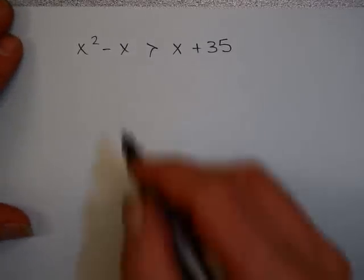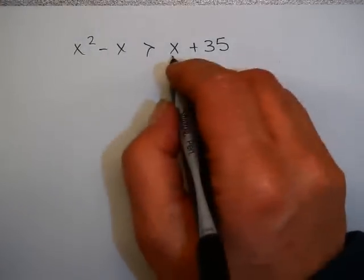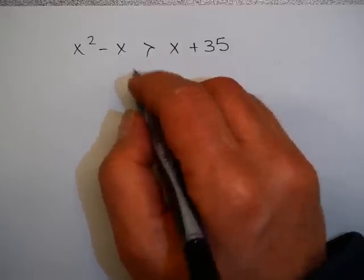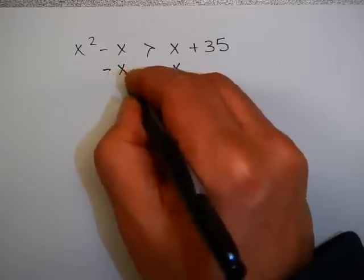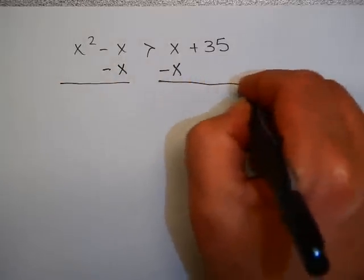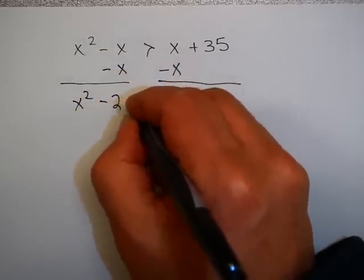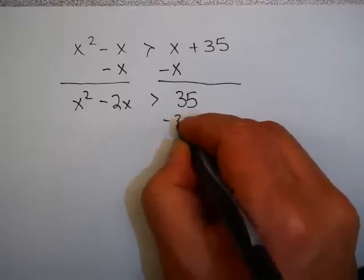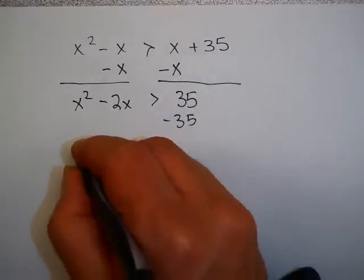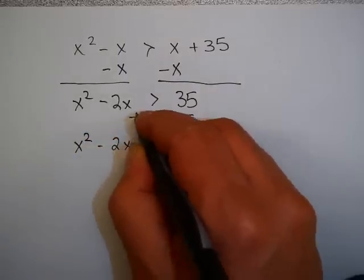Okay, let's move on. What if you have a problem where 0 isn't on one side? Well, what you can do, remember, is move everything so that 0 is on one side. So I'm going to subtract x from each side. x² - x - x is -2x is greater than 35. Subtract 35 from each side.